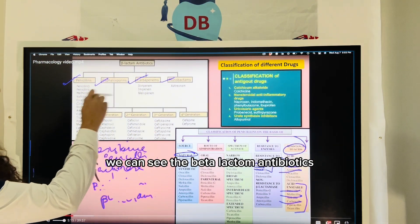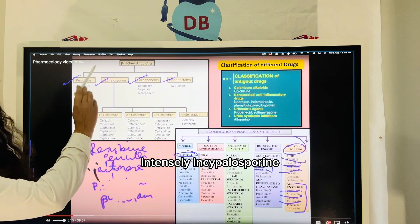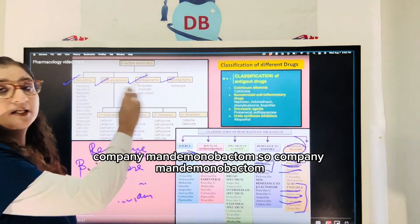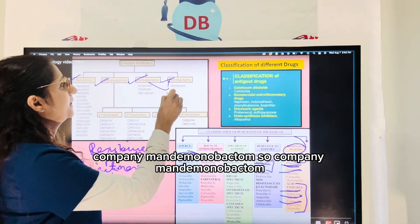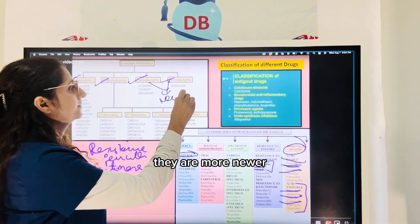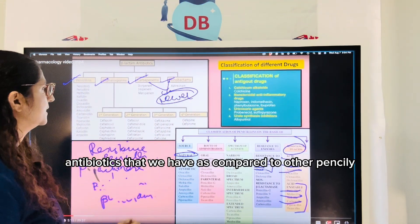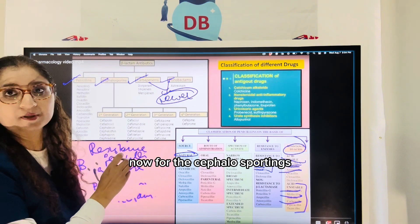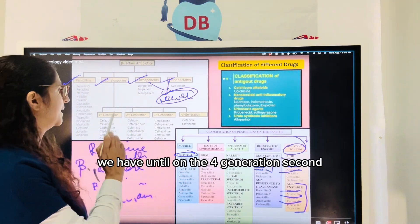Looking at the flow chart, we can see the beta-lactam antibiotics classified into penicillins, cephalosporins, carbapenems, and monobactams. Carbapenems and monobactams are newer antibiotics compared to penicillins.